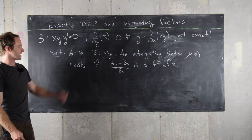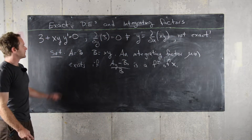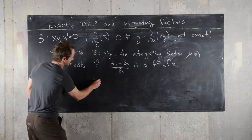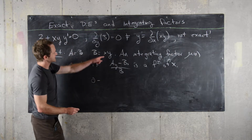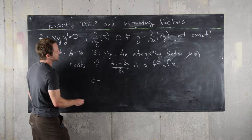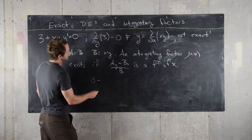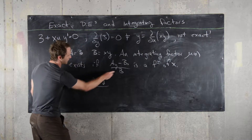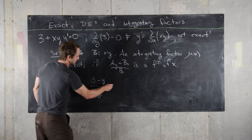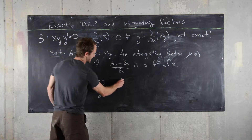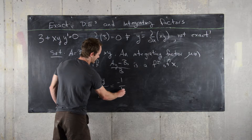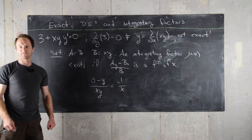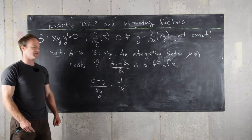So let's check that. If we compute a_y, that will be 0. Minus b_x, that will be y, over b, which is xy. So this equals negative 1 over x, and that is a function only of x.